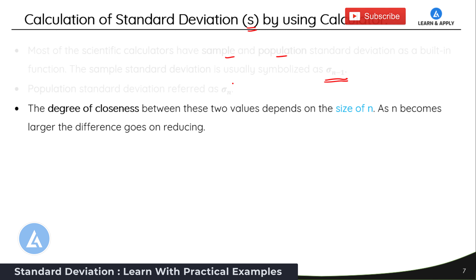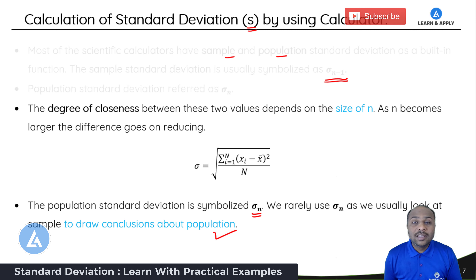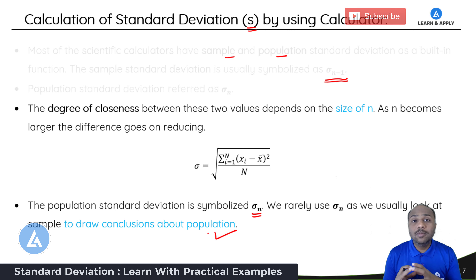The population standard deviation is calculated using this formula: sigma equals the square root of the summation from i=1 to n of (xi minus x-bar) squared, divided by n. We rarely use the population standard deviation because the intent is almost always to draw conclusions about the population by using a sample. If you are confused about which formula to use, simply check whether the question asks for sample standard deviation or population standard deviation.